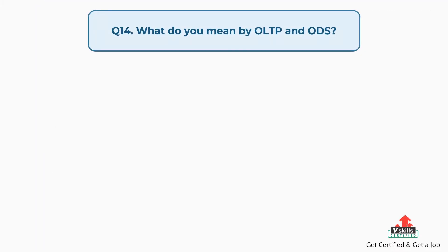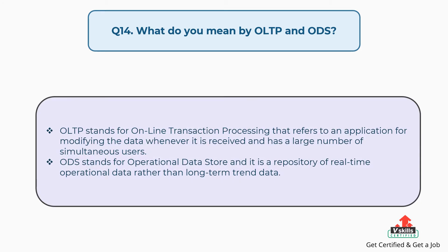Question number fourteen: What do you mean by OLTP and ODS? OLTP stands for online transaction processing, which refers to an application for modifying the data whenever it is received and has a large number of simultaneous users. ODS stands for operational data store, and it is a repository of real-time operational data rather than long-term trend data.